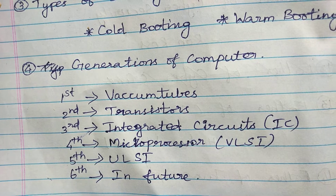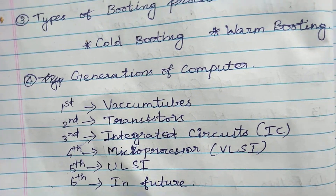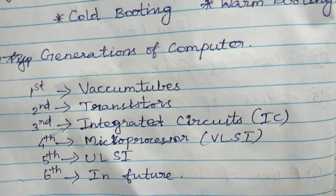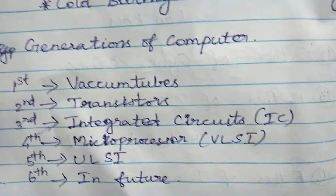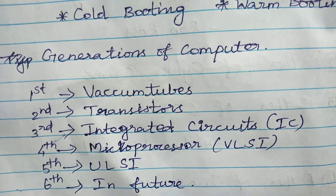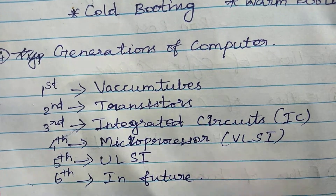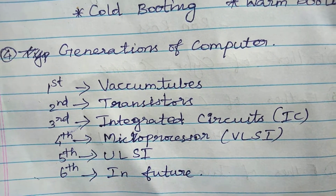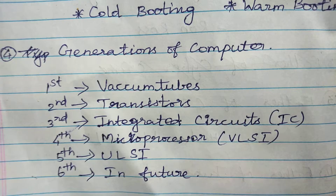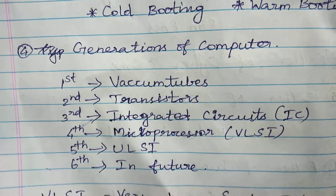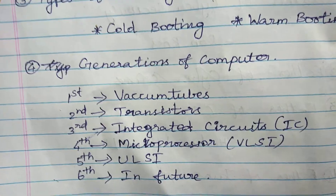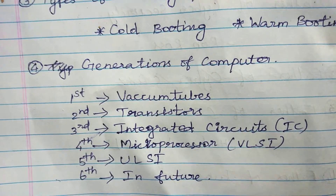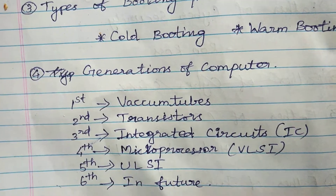Now, generations of computer. Five generations are available — sorry, actually six generations are available here. This is the new update: sixth generation is available.